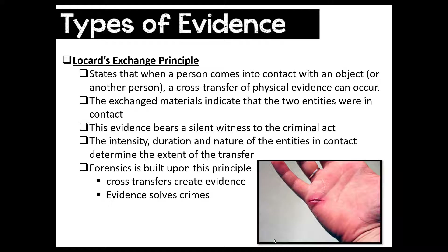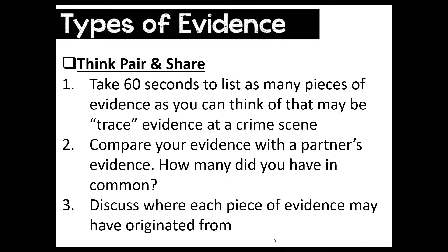Forensics is built upon this principle: cross-transfers create evidence, and evidence solves crimes. I want you to take a few seconds and jot down on a sheet of paper as many types of trace evidence that can be found at a crime scene. Imagine you are a forensic investigator working a crime scene — in 60 seconds, write down as many things as you can think of that could possibly be found as evidence. Pause the video now and do that.